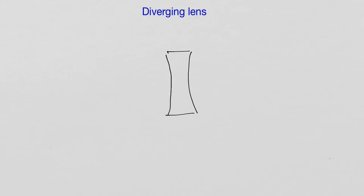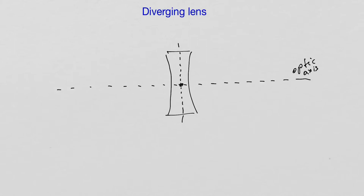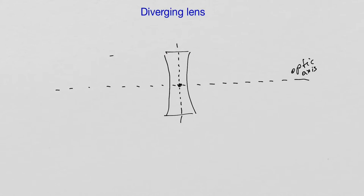Now let's look at the geometry of a diverging lens. Here is my diverging lens. I'm going to draw the optic axis passing through the middle of the lens. The center of the lens is here. If I look at light incident upon the lens from left to right, the light behind the lens is going to diverge away from the optic axis. It would appear as if the light is actually coming from a point in front of the lens.